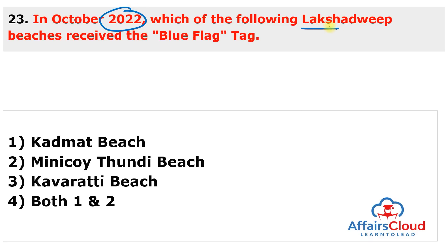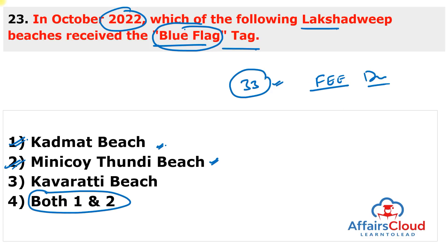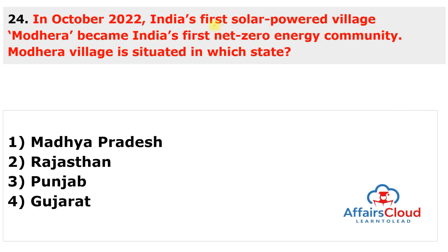Next question: which of the following Lakshadweep beaches received the Blue Flag tag? The answer is both Kadhmat Beach and Minikoy Thundi Beach. These two Indian beaches — Minikoy Thundi Beach and Kadhmat Beach, both in Lakshadweep — were accorded the globally recognized international eco-label known as the Blue Flag tag. They comply with all 33 criteria mandated by the Foundation for Environment Education (FEE) in Denmark. With this certification, India's total number of Blue Flag beaches reached 12, as announced by Union Minister Bhupender Yadav.